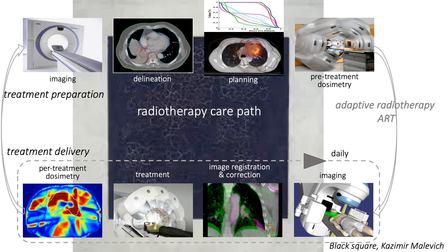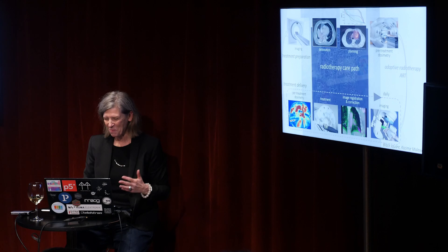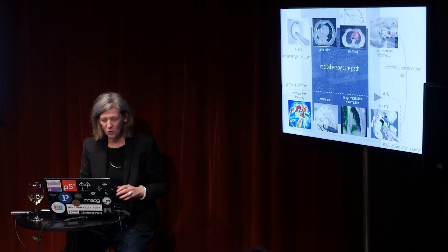If during treatment imaging we see that something changes — that the tumor shrinks a lot or the anatomy of the patient changes — then we start the whole preparatory cycle again. This is what we call adaptive radiotherapy, or in our terms, ART — it has nothing to do with art, but that's adaptive radiotherapy.